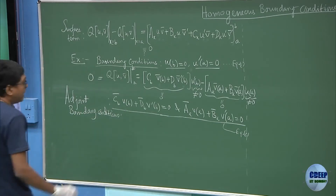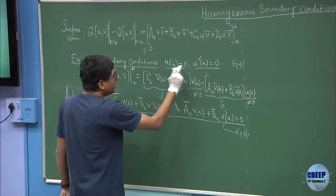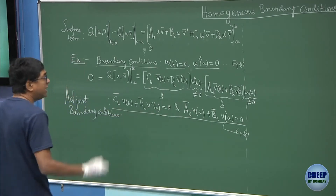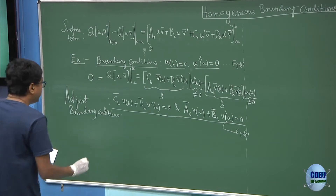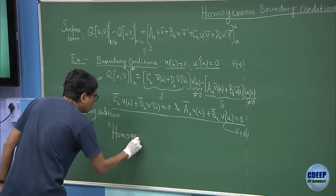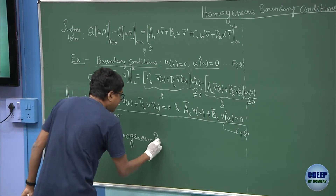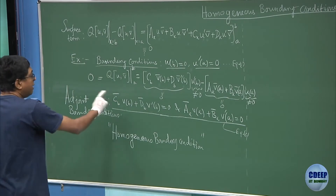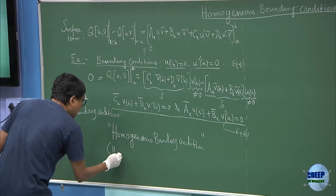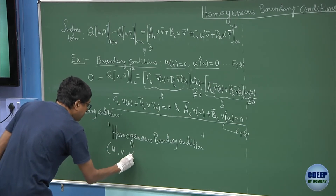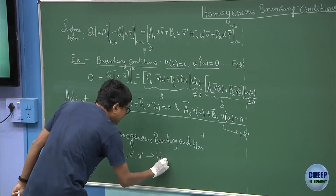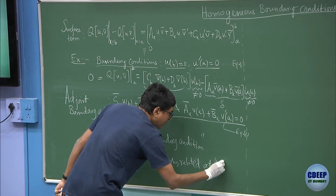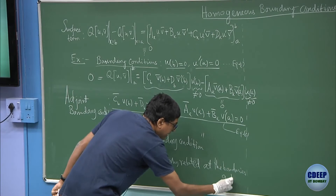The most important thing to observe is that this is linear in u and u′, and this is also linear in v and v′. In general, such linear boundary conditions on the u and v functions are called homogeneous boundary conditions. This word 'homogeneous' merely refers to the fact that u, v, u′, v′ are linearly related at the boundaries a and b.